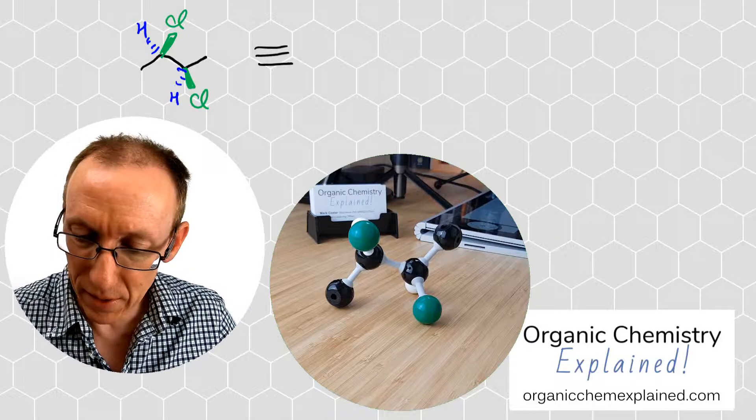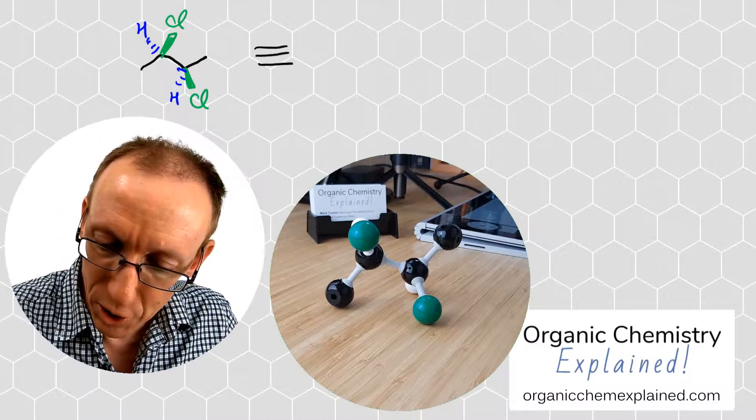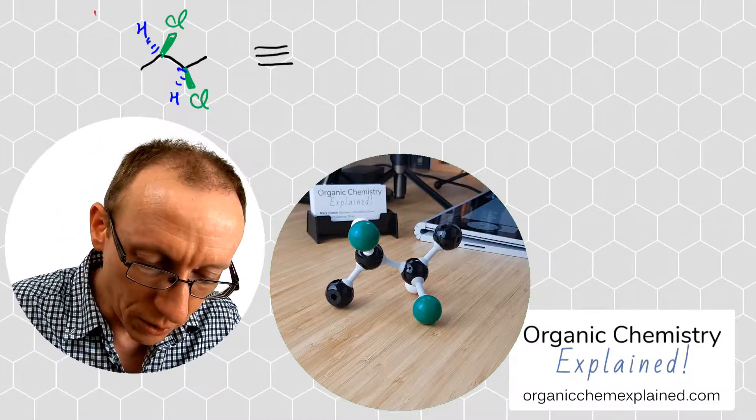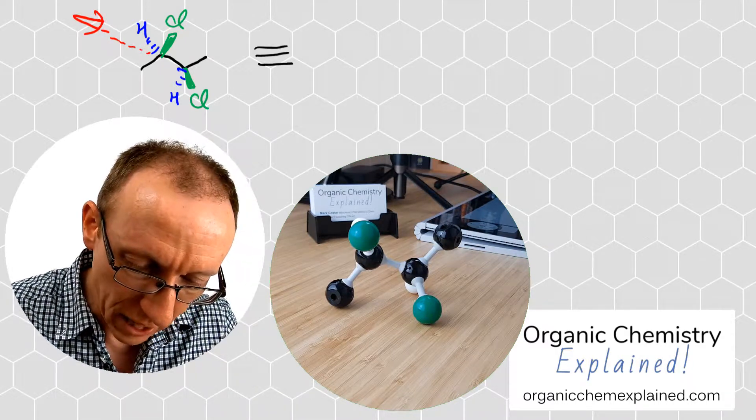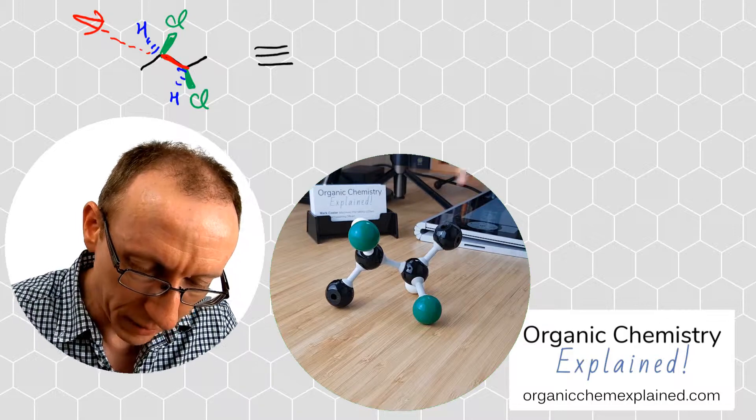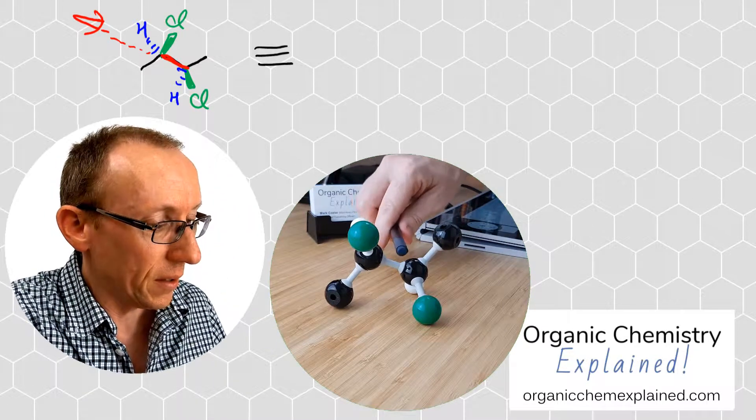I want to draw this as a Newman projection and for a Newman projection we want to imagine that we've got our eye looking along the central carbon-carbon bond. Along this bond here and that's this bond here.